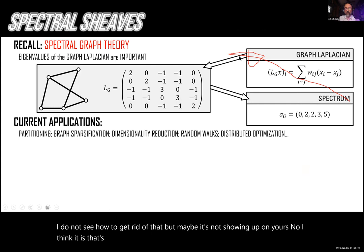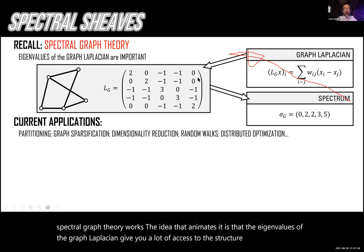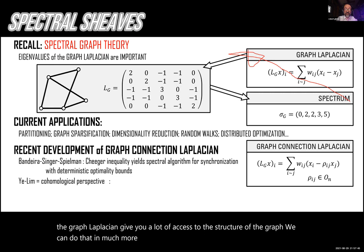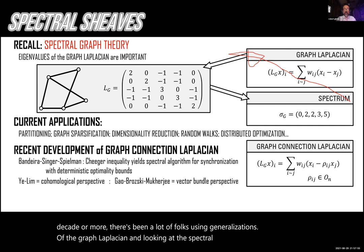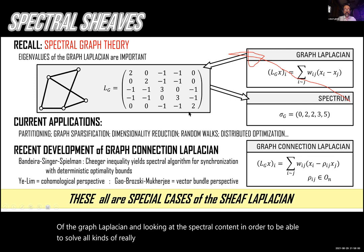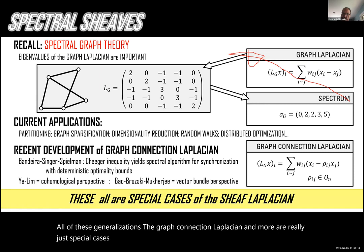The way spectral graph theory works is that the eigenvalues of the graph Laplacian give you a lot of access to the structure of the graph. We can do that in much greater generality. Over the past decade, there have been many people using generalizations of the graph Laplacian — the graph connection Laplacian and more — to solve all kinds of cool problems. All of these generalizations are really just special cases of the sheaf Laplacian.